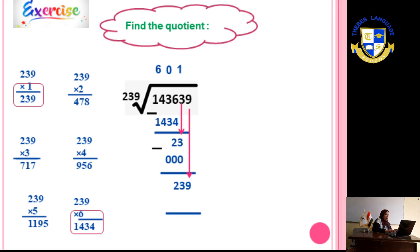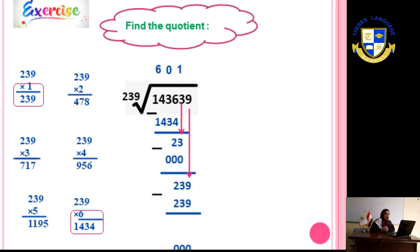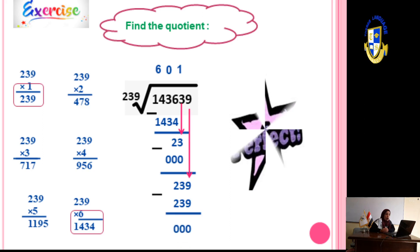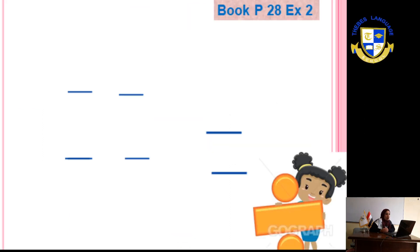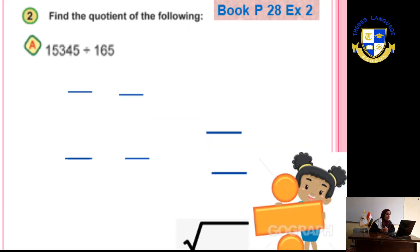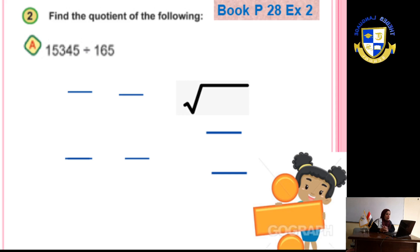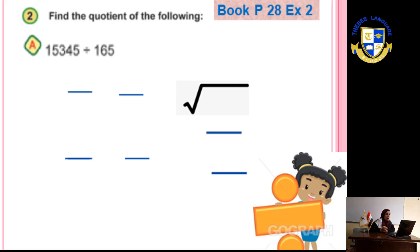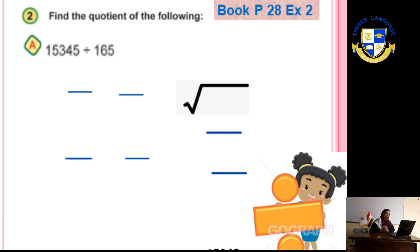You can find more exercises. This exercise is from your school book, page 28, exercise 2. 15,345 divided by 165. After you write the timetable of 165 and follow the steps as we did before, the answer will be 901.